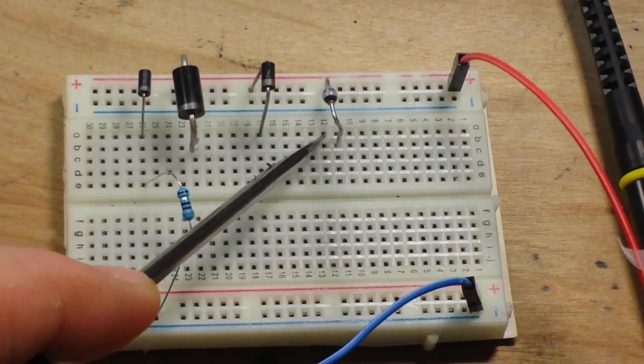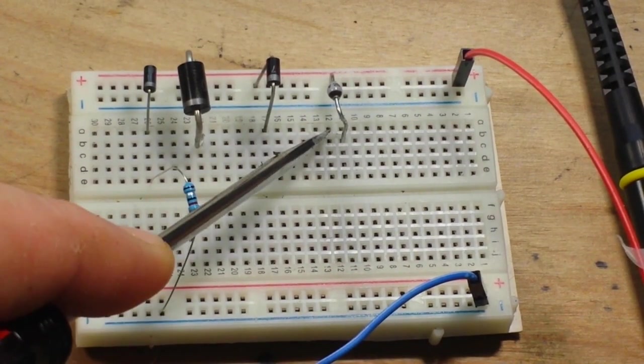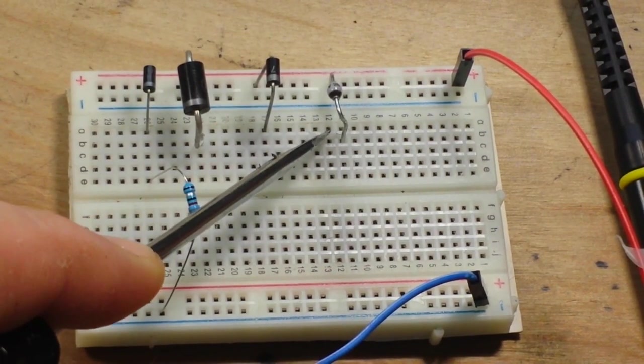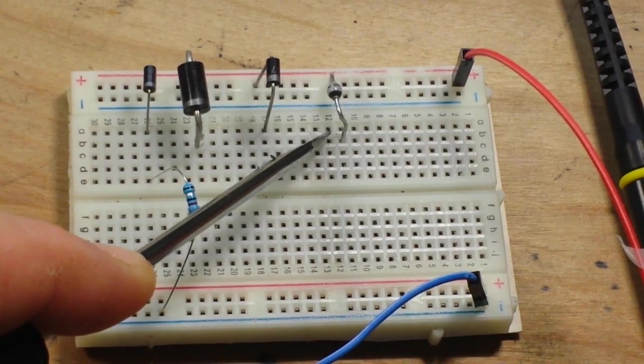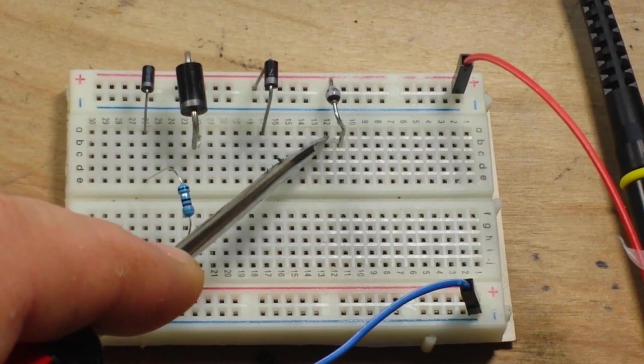And finally, we have this diode here, which is a sintered glass ultra fast recovery time high avalanche diode. It is a BYV26CV.